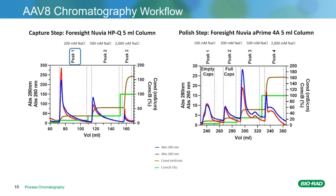On this slide, we're showing the final AAV8 chromatography workflow. On the left is a chromatogram showing the capture using the Nuvia HPQ. You see peak one is the 200 mM salt fraction, which had greater than 90% of particles. That was then diluted 1 to 5 and loaded onto the Nuvia A'4A, which is shown on the right. And the 200 mM salt showed enrichment for the full capsids compared to the other elution steps.